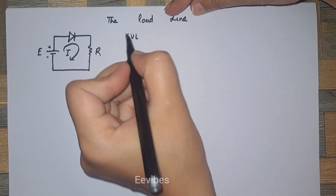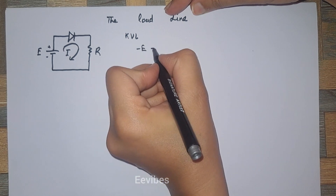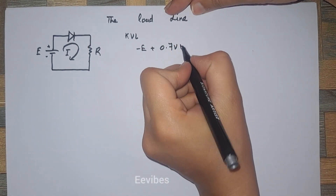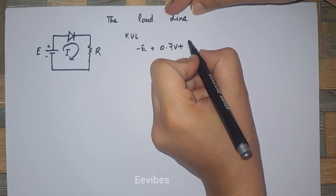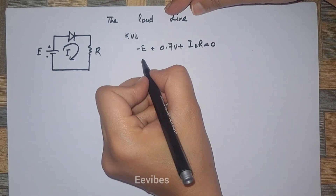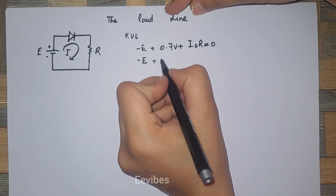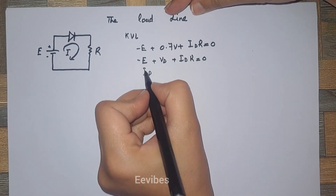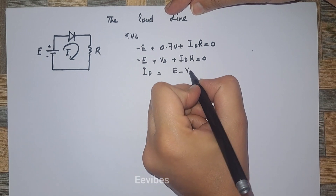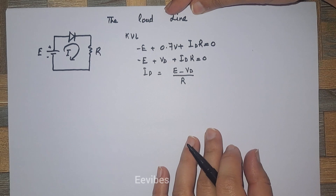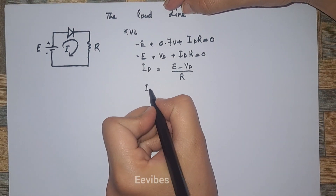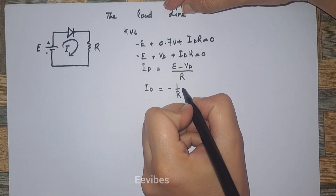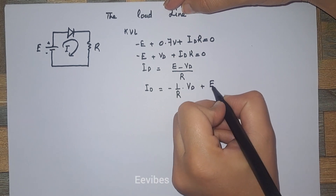This circuit behavior can also be represented graphically. Applying KVL: minus E plus 0.7 volt diode drop (for a silicon diode) plus ID into R equals zero. Or simply: minus E plus VD plus ID into R equals zero. From here you can determine ID equals (E minus VD) over R. This equation can also be written as ID equals minus 1 over R into VD plus E over R.